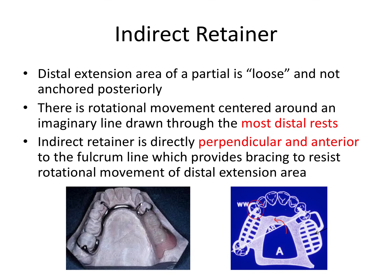Lastly, let's talk about the indirect retainer, starting with a brief physics lesson. With a distal extension area of a partial, the partial is not anchored posteriorly, so it can sort of flap up and down with the bounciness of the soft tissue of the ridge. Because of that, there's rotational movement centered around an imaginary line drawn through the most distal rests — this is really, really important.